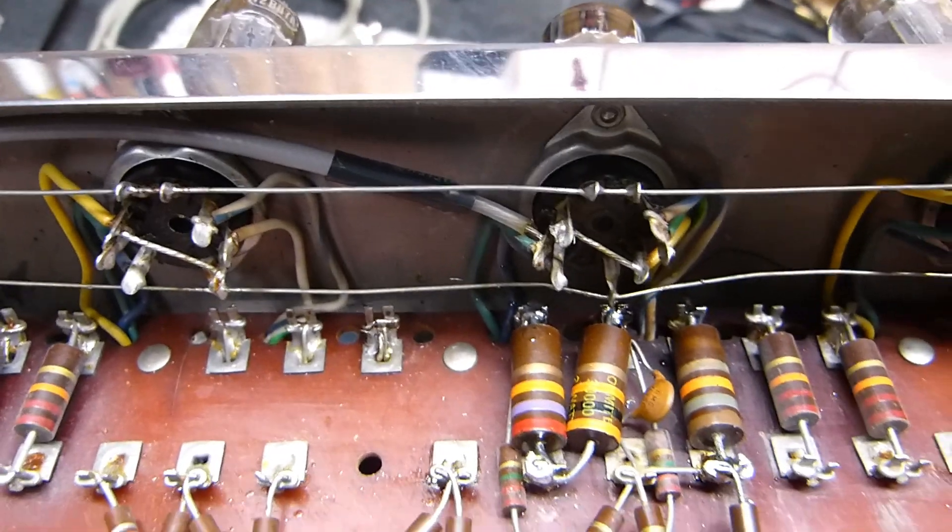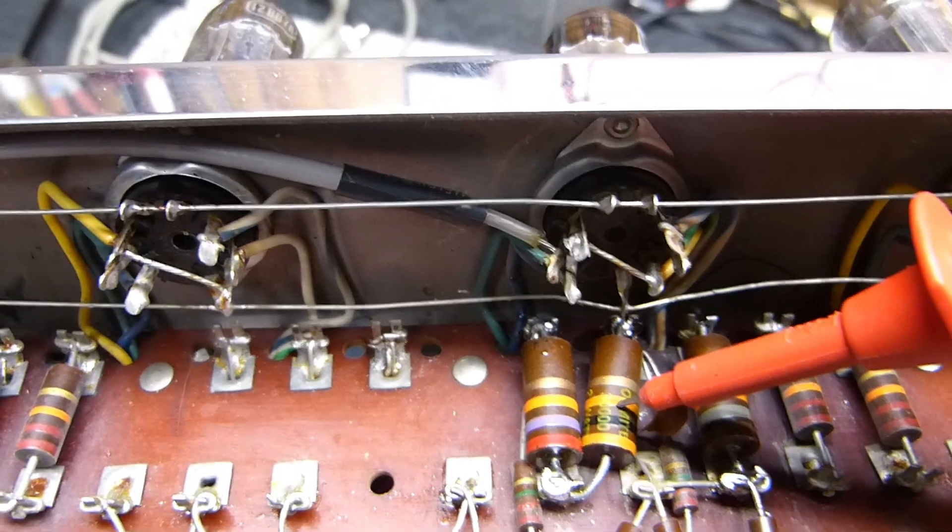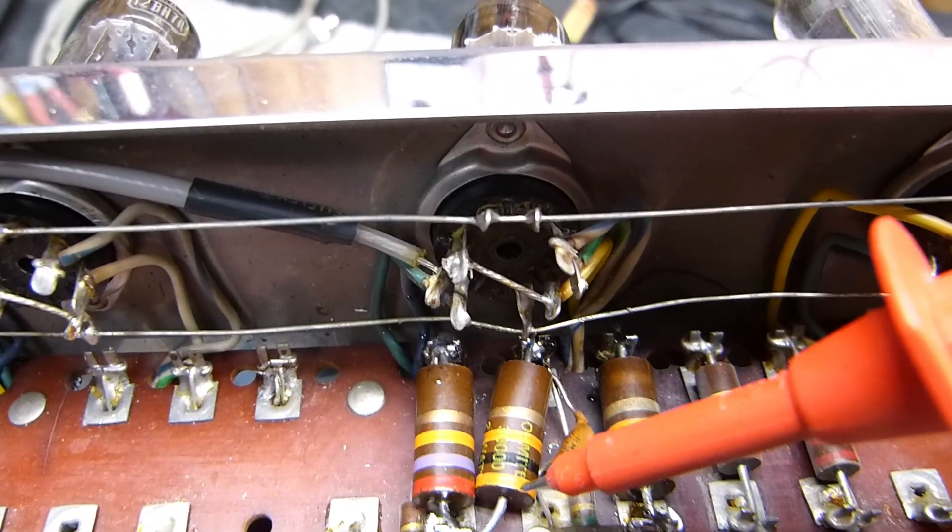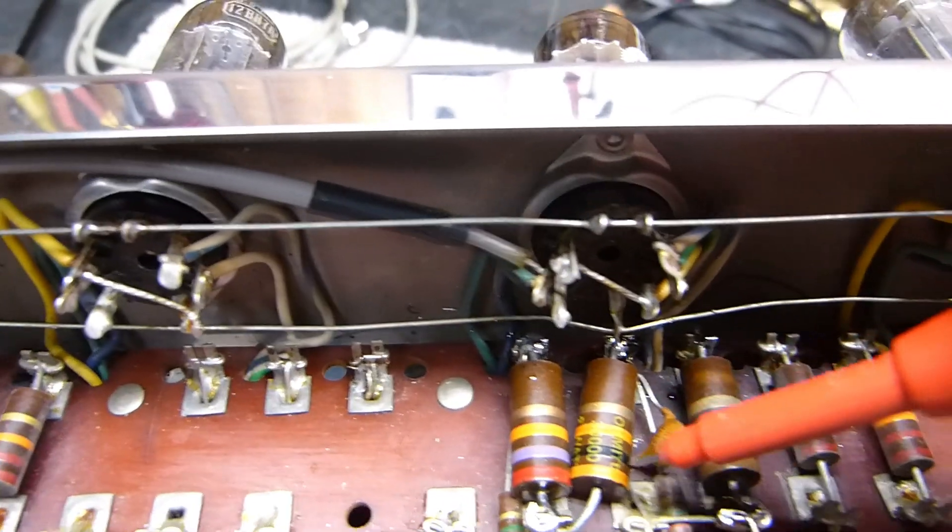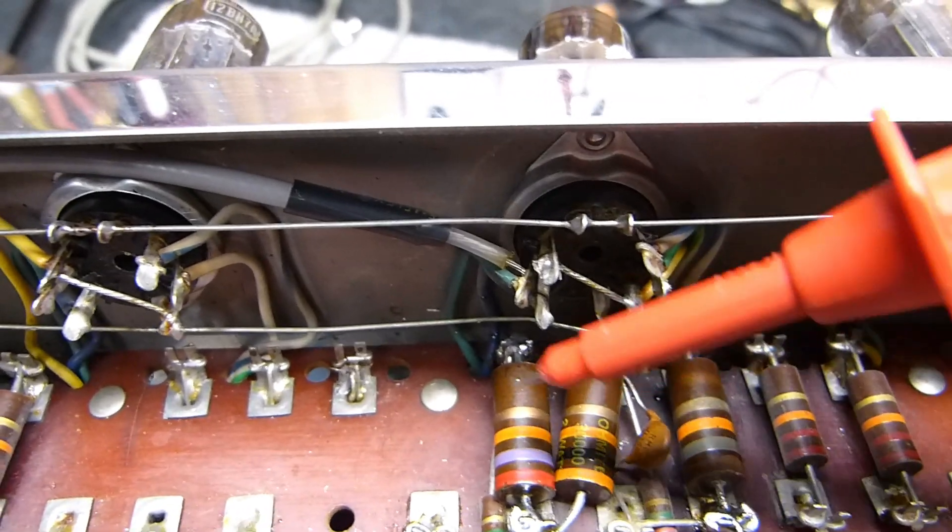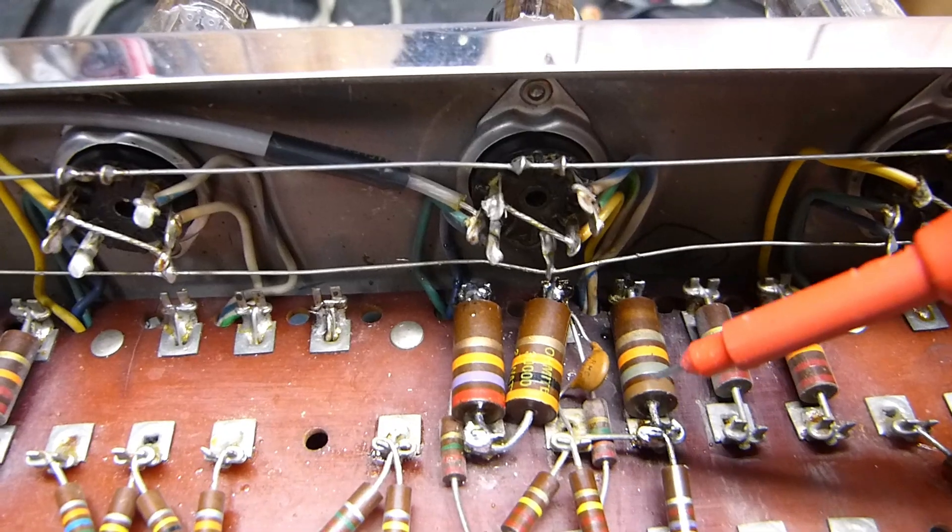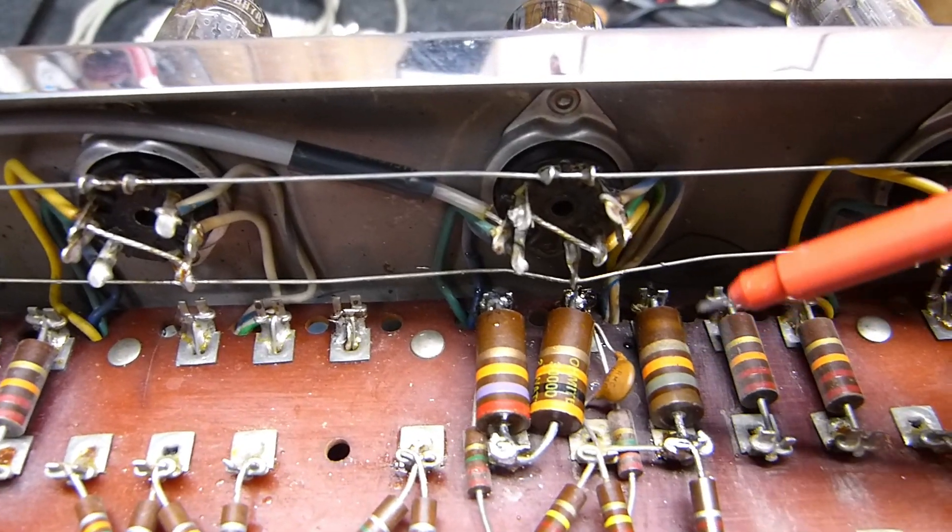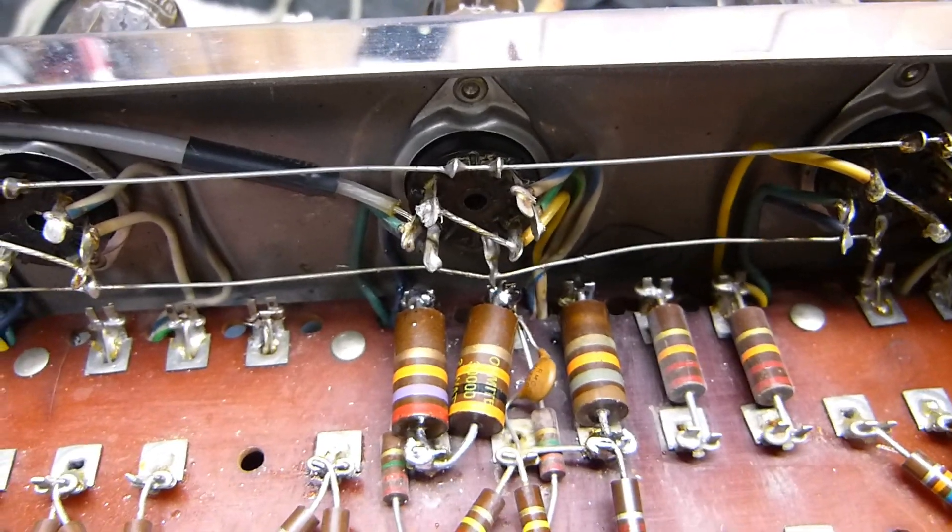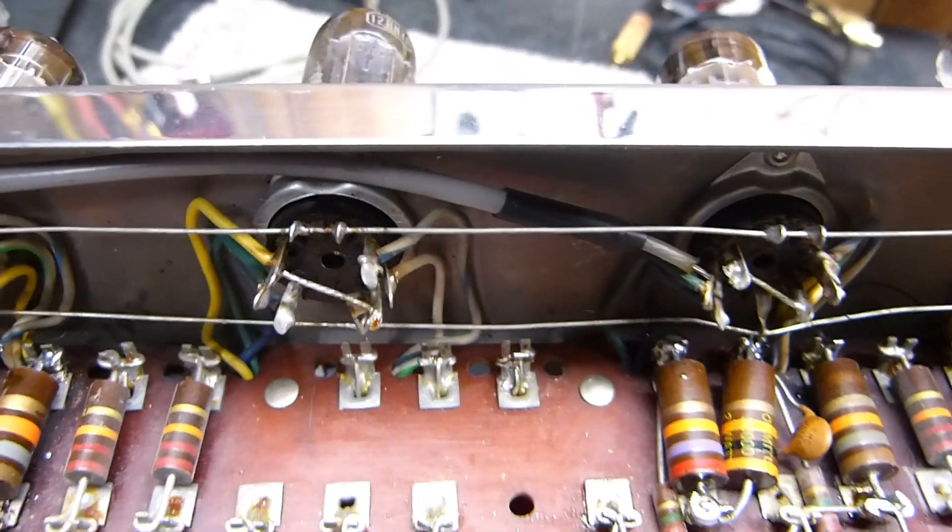Some of these really high quality resistors, look at that. They even stamp on here its value and everything. Yeah, this thing in here looks like 100k, but that's orange black orange. It's a 27k. Okay, there's 18k, brown gray orange. See, it looks yellow in here. That's not 180k. That is brown gray orange in real life.